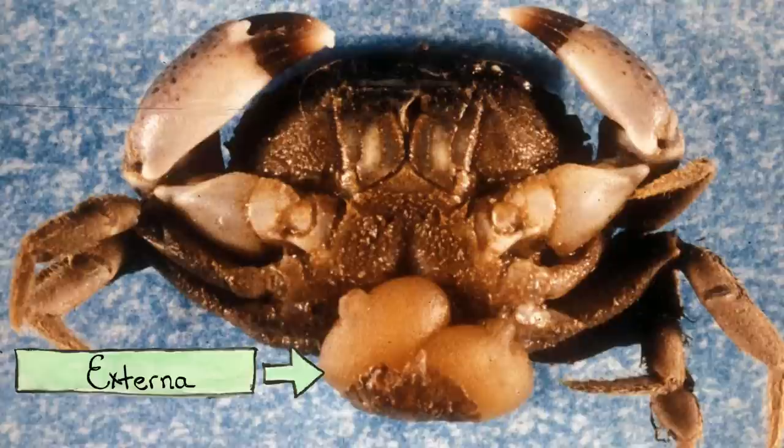So this is all pretty creepy, but why should we care? Well, these parasites can be extremely prolific. For example, in some places in the Chesapeake Bay, up to 75% of the mud crabs are infected, which means that none of those crabs can reproduce.